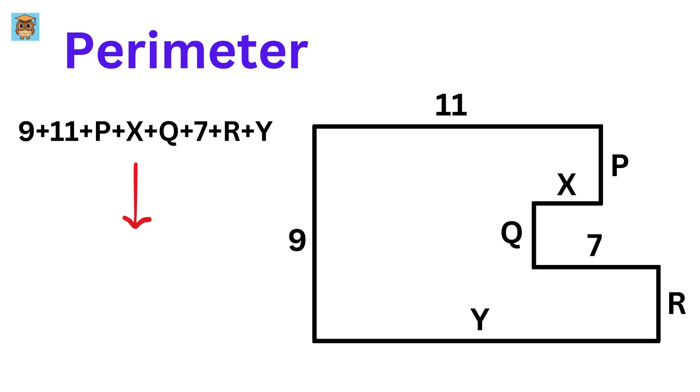This will be equal to 27 plus, put this part inside a bracket, P plus Q plus R, and then put this X plus Y inside a bracket. Great!